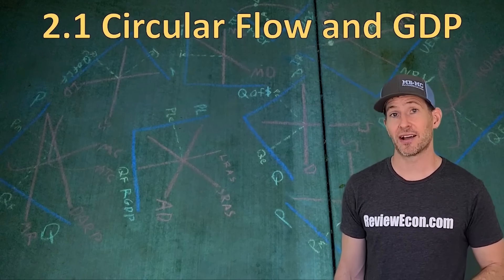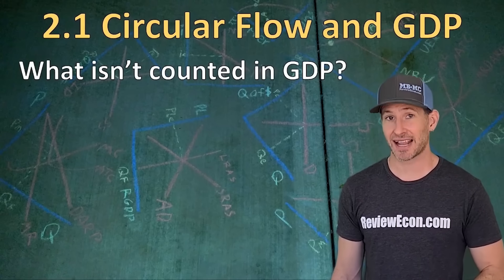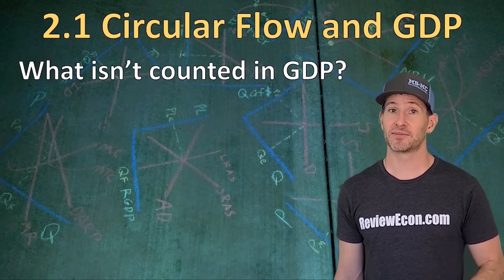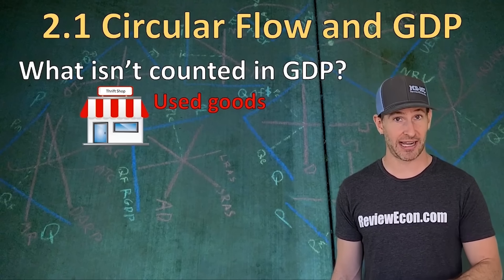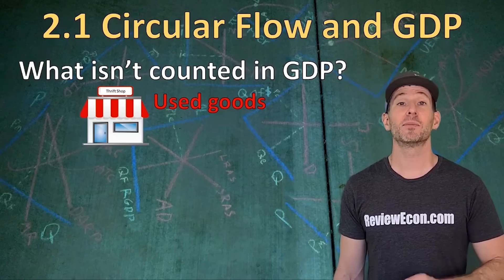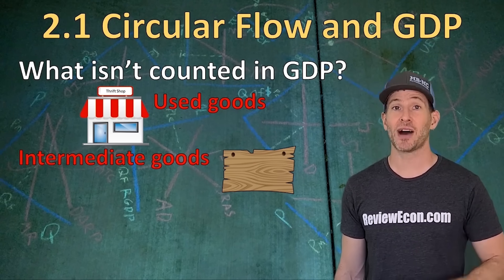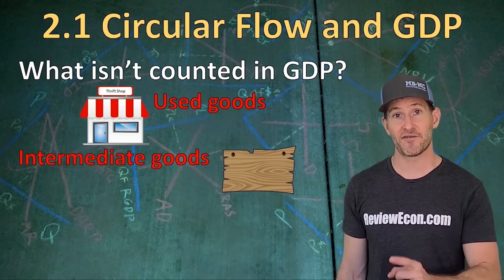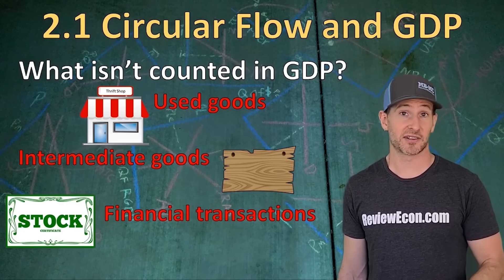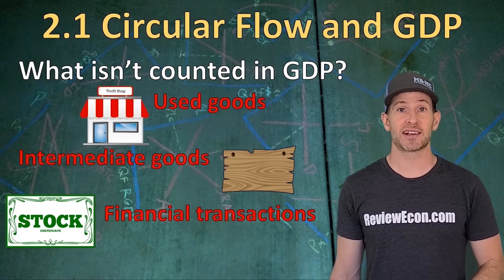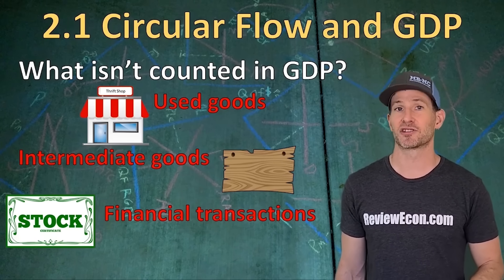When it comes to GDP, we're attempting to calculate the total amount of wealth produced within a country for a particular year. That leads us to some items that are specifically not counted. First, used items were already counted in a previous year, so when resold, we don't count those transactions. Intermediate goods, such as lumber purchased by a contractor, are not counted because the final house will be counted — it's final production we look at, not intermediate goods. The last exclusion is financial transactions such as stock purchases or transfer payments, where goods and services are not being produced — money is simply being shuffled around.